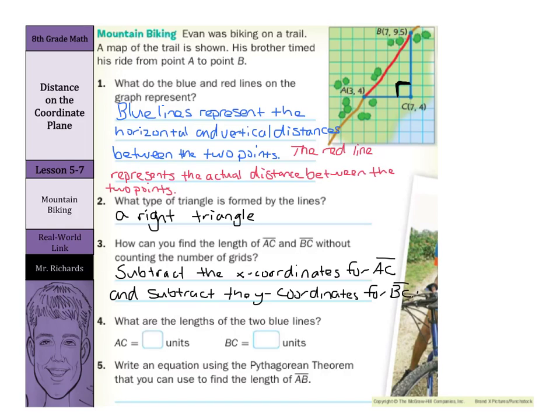And what are the lengths of the two lines? Well, we counted these. Or you could also subtract 7 minus 3, which got us 4. And then for BC, 9½ minus 4 is 5½.